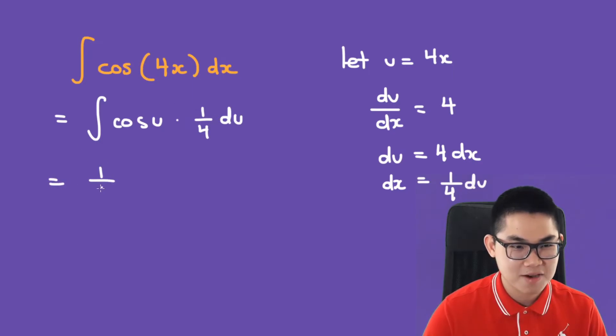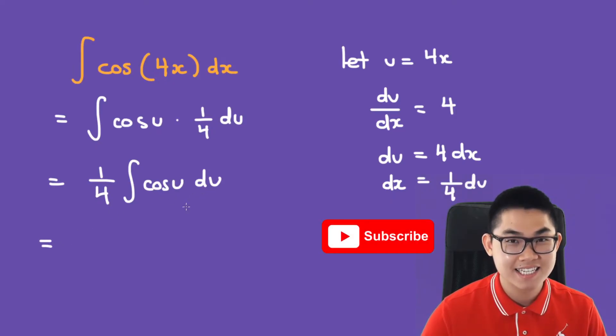We need to move the constant out. We have 1 over 4 times the integral of cosine of u du. And the antiderivative of cosine is sine. That's going to be 1 over 4 times sine of u plus c.